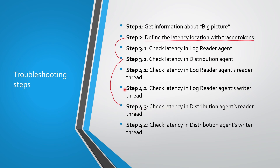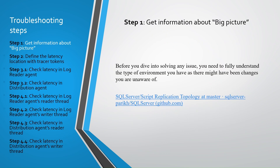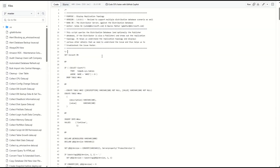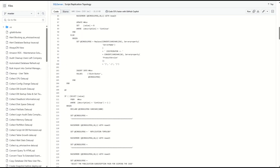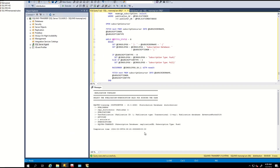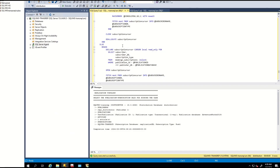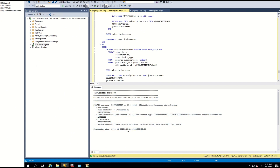Before you dive into solving any issue, you need to fully understand the type of environment you have, as there might have been changes you are unaware of. The most obvious way to do this is to run the script by Microsoft that is publicly available on GitHub. When you go to the GitHub link, you will find this topology script. If you run this script in SSMS, you will get your topology information including distribution database, server, publications, and subscriptions. If everything is as expected, go to the next step.